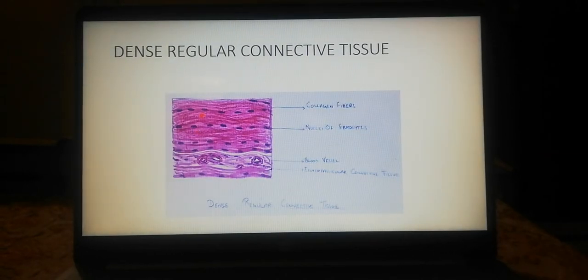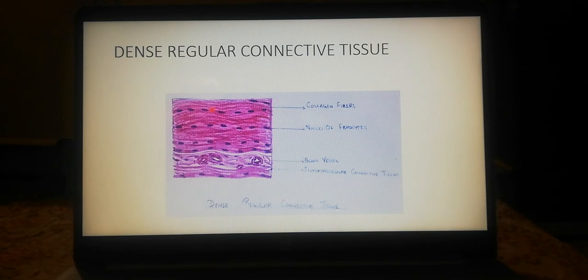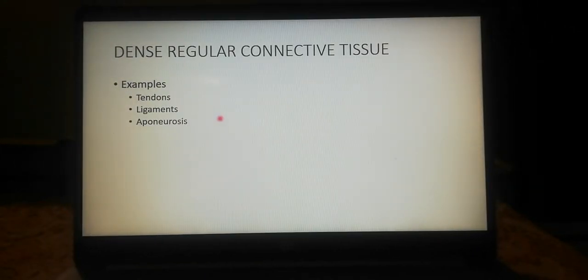Next is the dense regular connective tissue. In this type, the collagen fiber bundles are present in a parallel arranged manner, and the fibrocytes are also seen here. This type of connective tissue is found in tendons, ligaments, and aponeuroses.